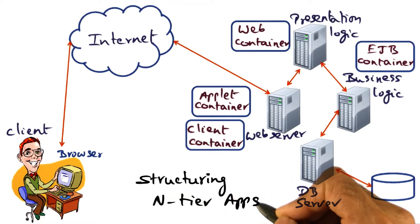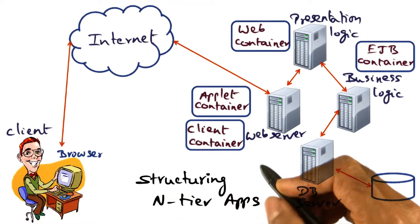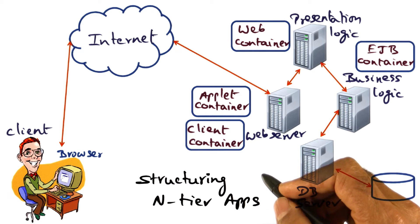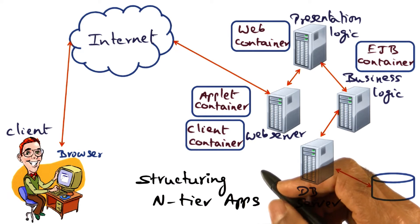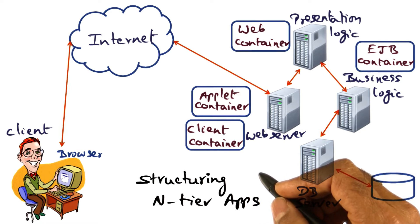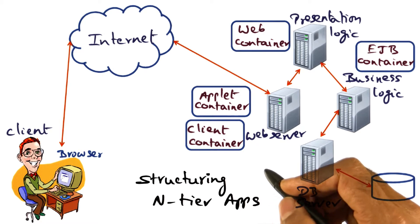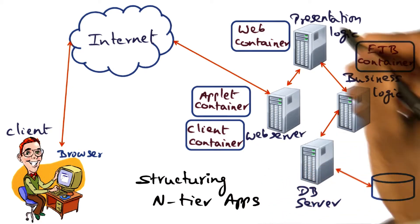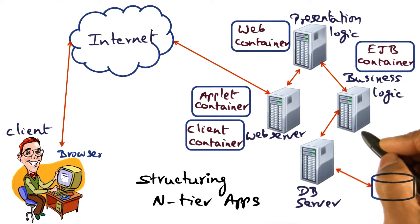To structure these N-tier applications, we're going to talk about one particular framework as an example. There are other frameworks that provide similar functionality to the JEE framework, which is called the Java Enterprise Edition framework. In the JEE framework, there are four containers for constructing an application service.